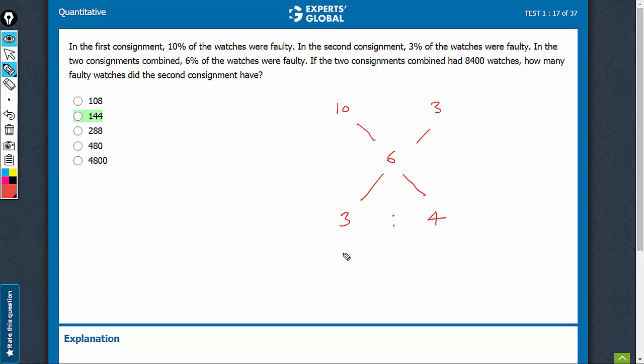Total is 8400. So this part is 8400 × 3 ÷ 7 and this part is 8400 × 4 ÷ 7.